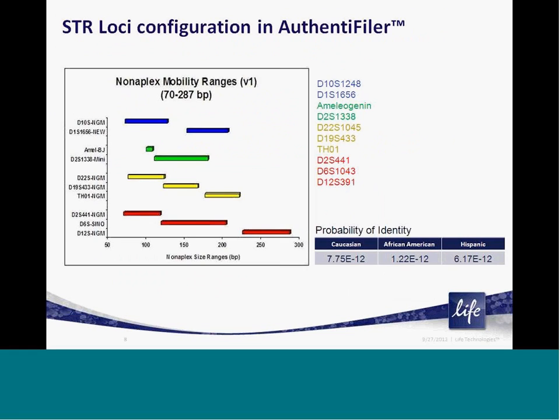Here are the target loci included in the Authentifiler PCR Amplification Kit. A total of 10 loci are amplified as part of the kit: 9 STR loci and the ameliogenin sex identification marker. Due to an individual's uniqueness of the alleles present at each of these loci, the combined discriminatory power of the kit is on the order of 1 in 1 trillion, meaning there is a 1 in 1 trillion chance of a random individual or cell sharing the same genetic identity.